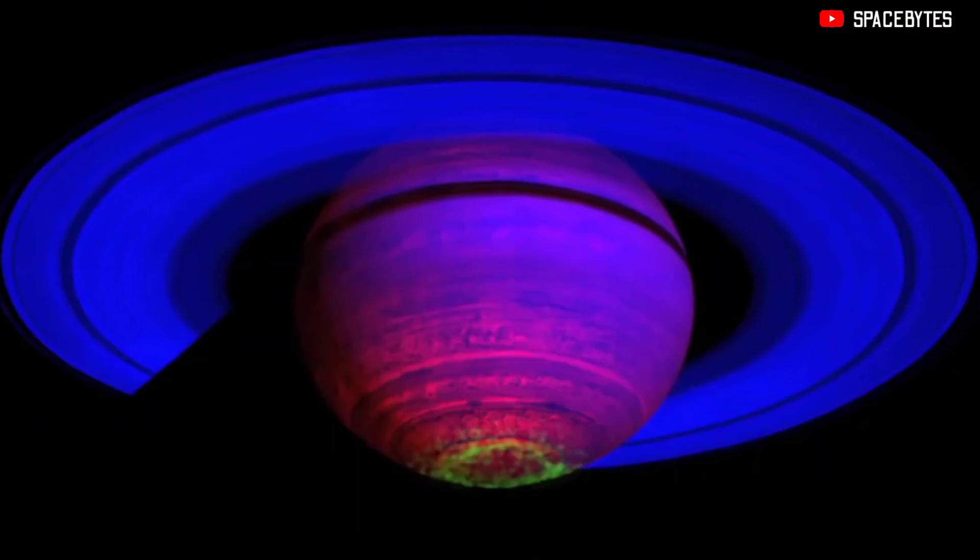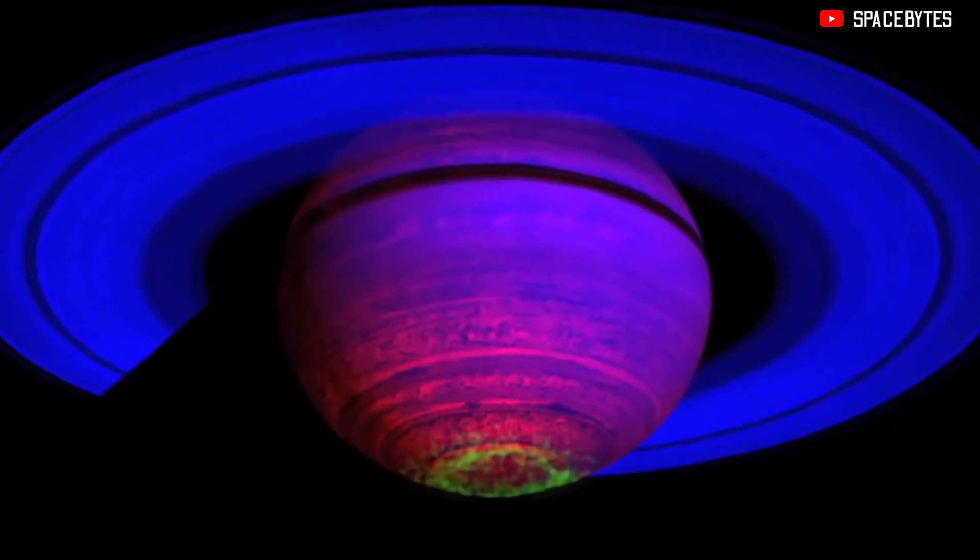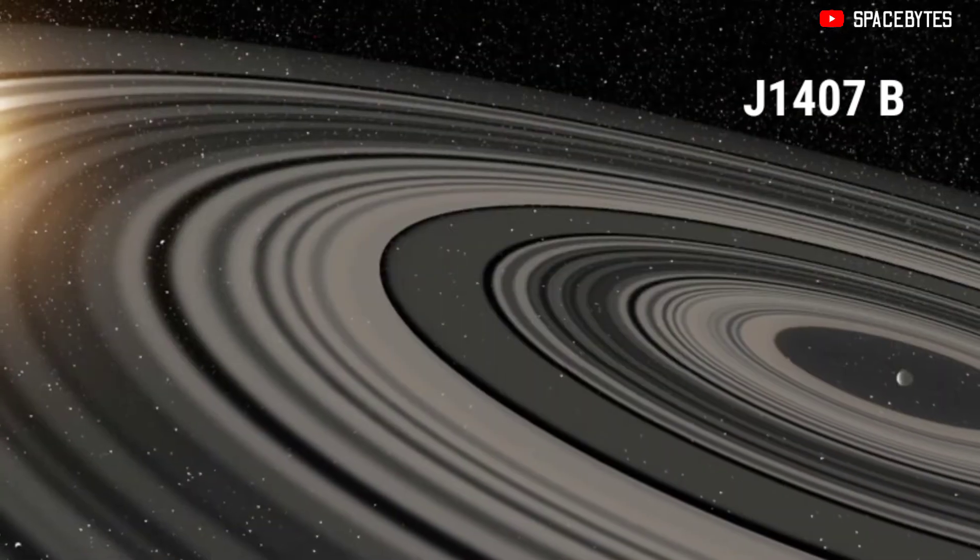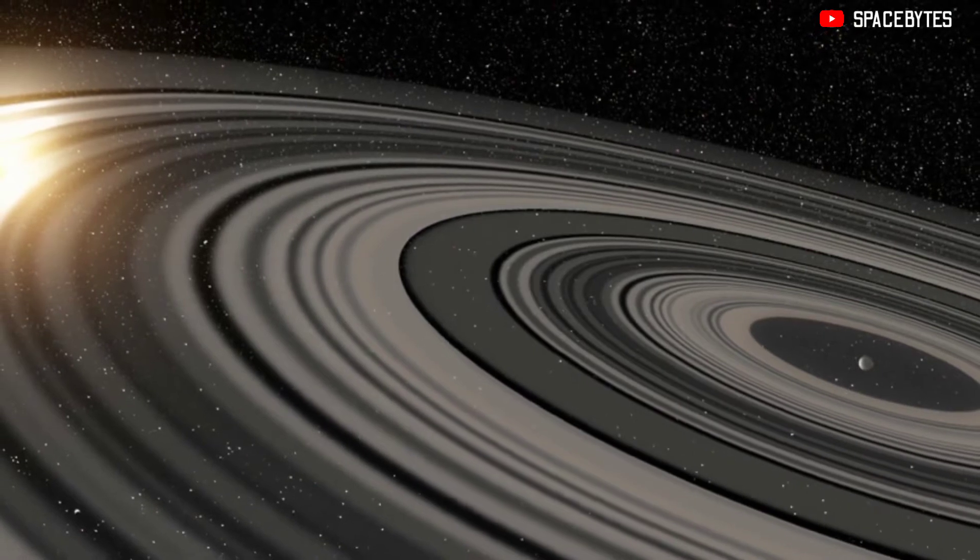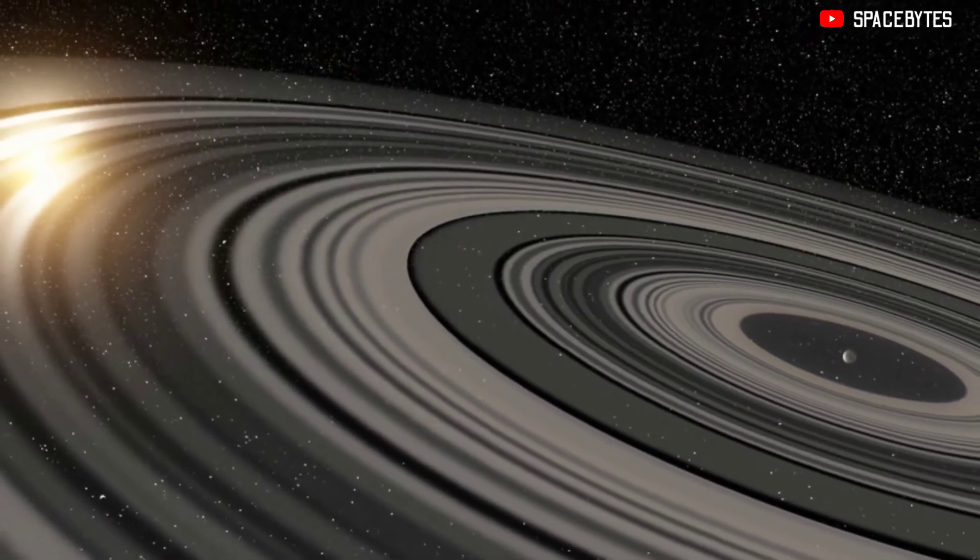Saturn is not the only planet to have an amazing ring system. There is a planet known as J1407b, a gas giant with a massive ring system. The planet possesses one of the largest known ring systems in the galaxy.